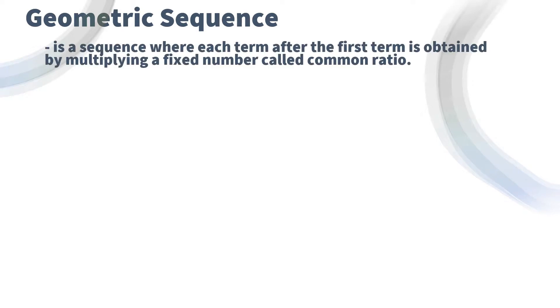On our previous lesson, we defined geometric sequence as a sequence where each term after the first term is obtained by multiplying a fixed number called the common ratio, which is denoted by r. So therefore, we can use this formula to get the general rule of our geometric sequence.